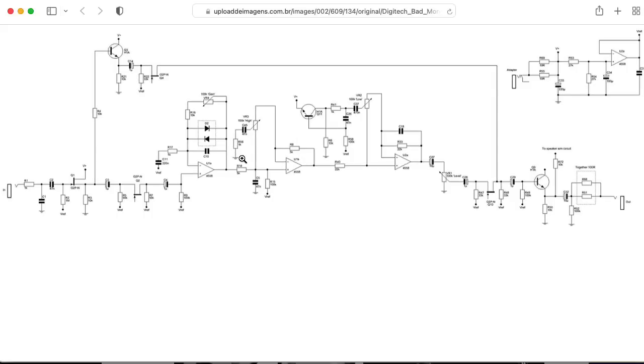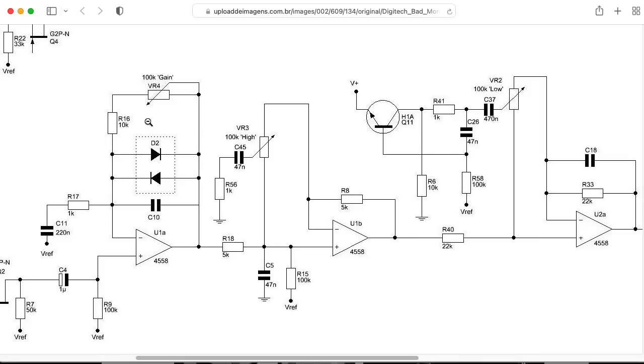And here's the schematic that's floating around for the Bad Monkey. You'll see that it's basically a tube screamer. We have a non-inverting op amp configuration with clipping diodes in the feedback loop, followed by a tone stage here that has a pot hooked to a gyrator. One thing to be careful about is that there's at least one error on the schematic. The emitter and the collector here are swapped. The emitter should be going this direction, and the collector should be hooked to V+.